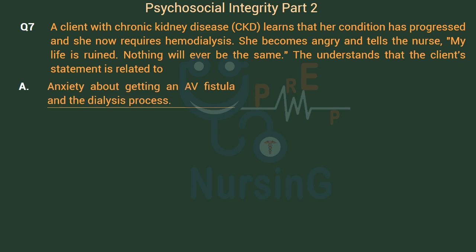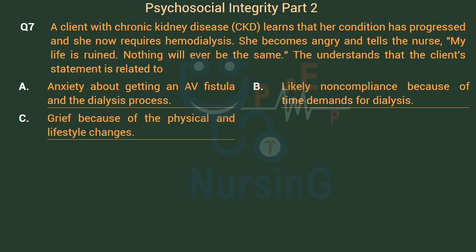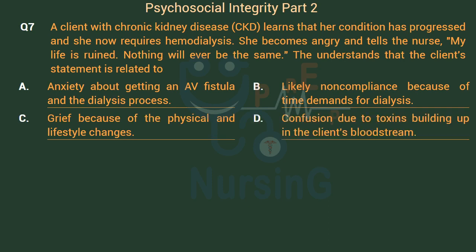Option A: Anxiety about getting an AV fistula and the dialysis process. Option B: Likely non-compliance because of time demands for dialysis. Option C: Grief because of the physical and lifestyle changes. Option D: Confusion due to toxins building up in the client's bloodstream.